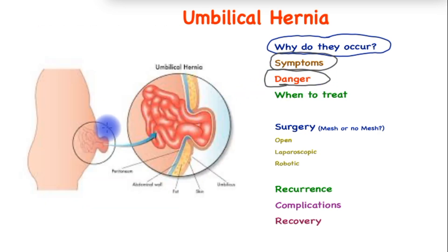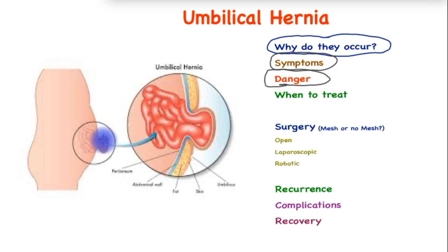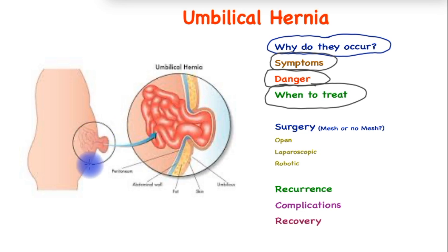The biggest danger of umbilical hernia is that the defect may cause a loop of bowel to become trapped and lose its blood supply and become strangulated. This tends to occur quite late in the process when the hernia has enlarged significantly and has not been attended to over time. Other than the bowel, abdominal fat can sometimes also get trapped and give rise to significant pain.